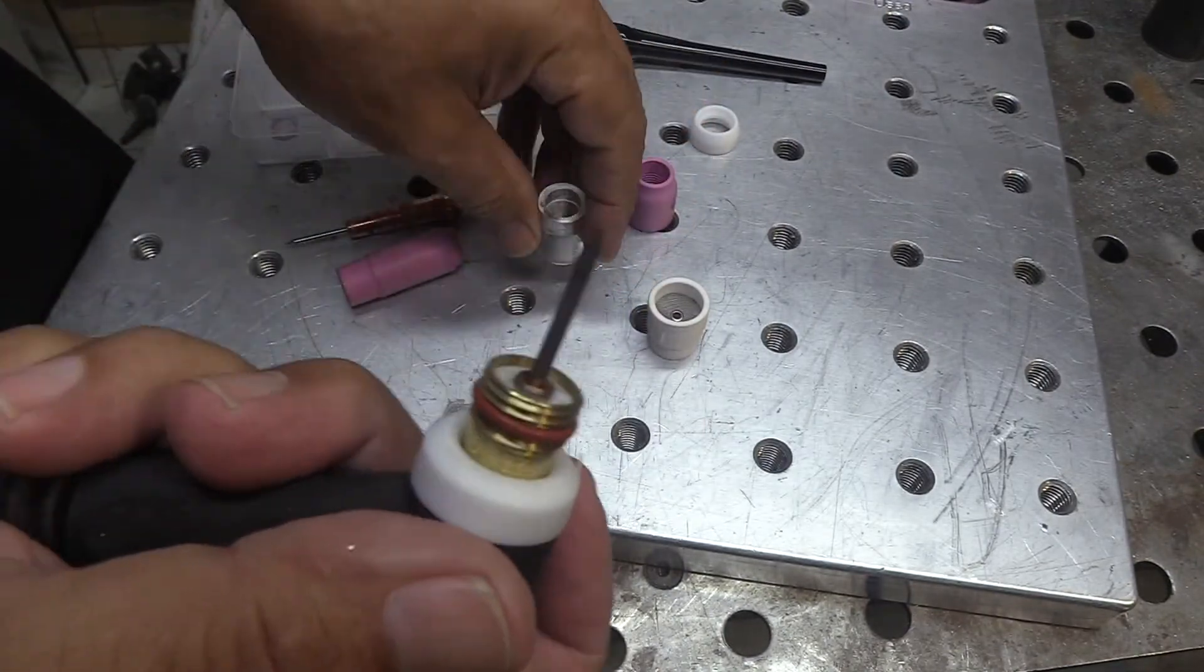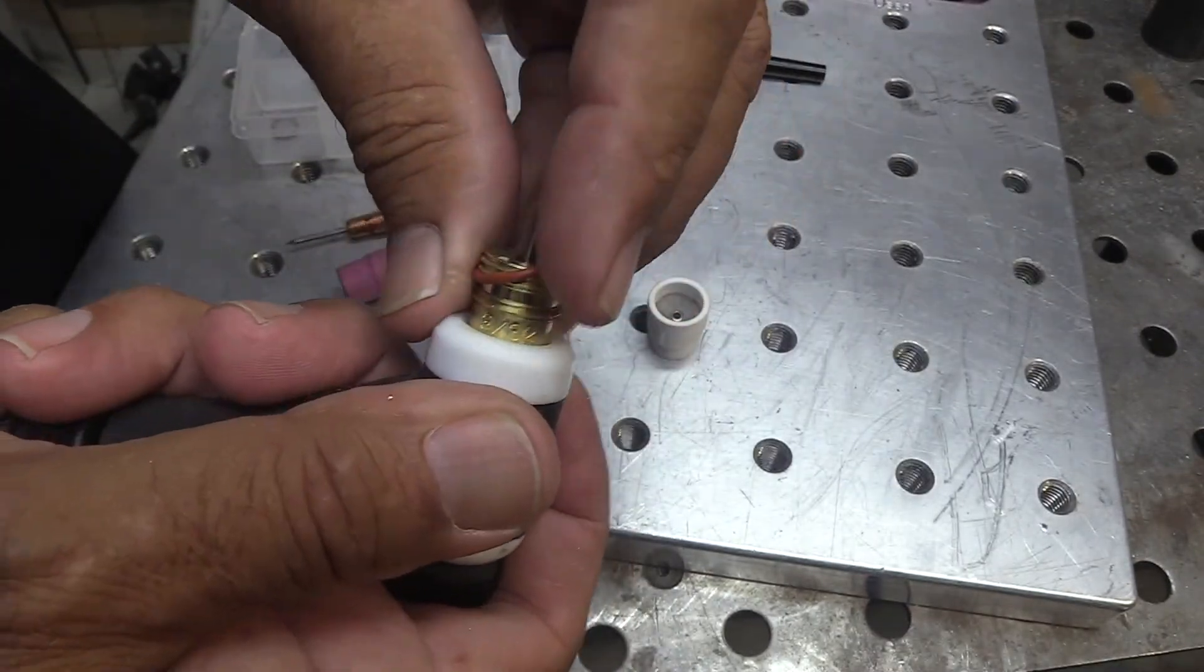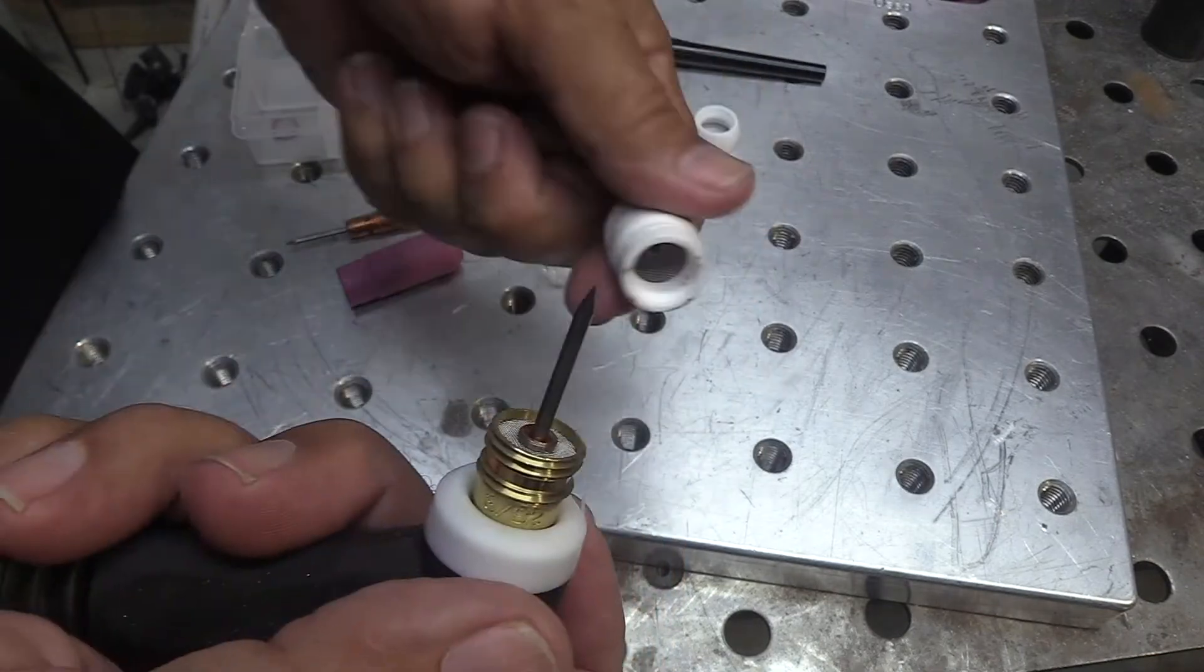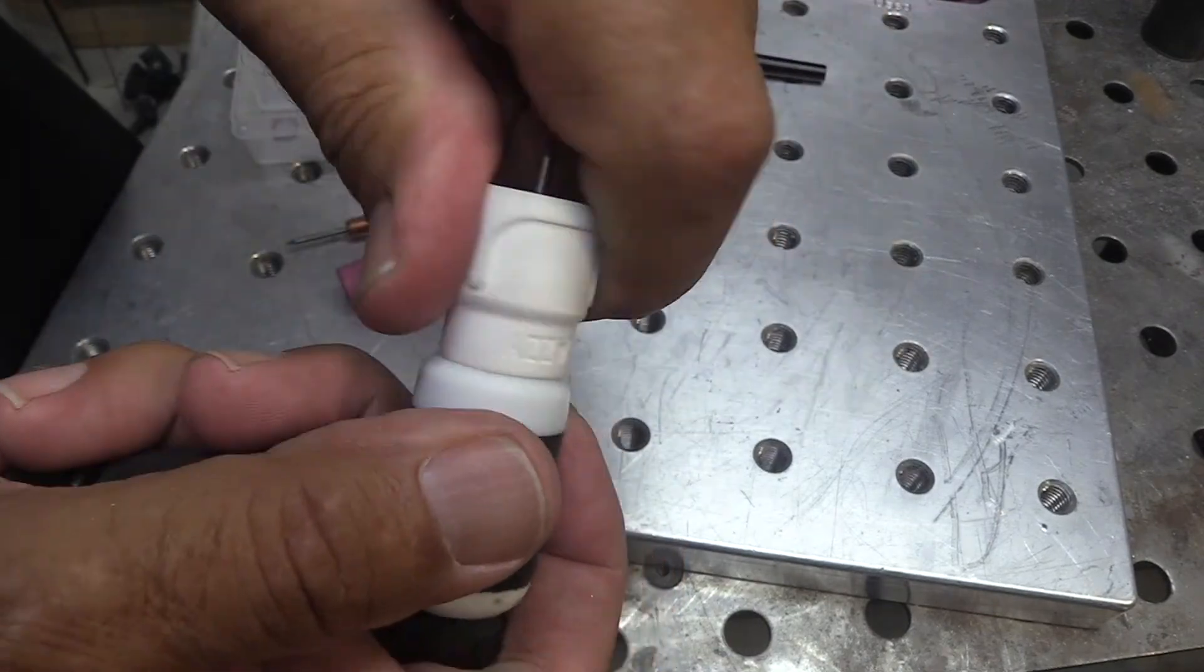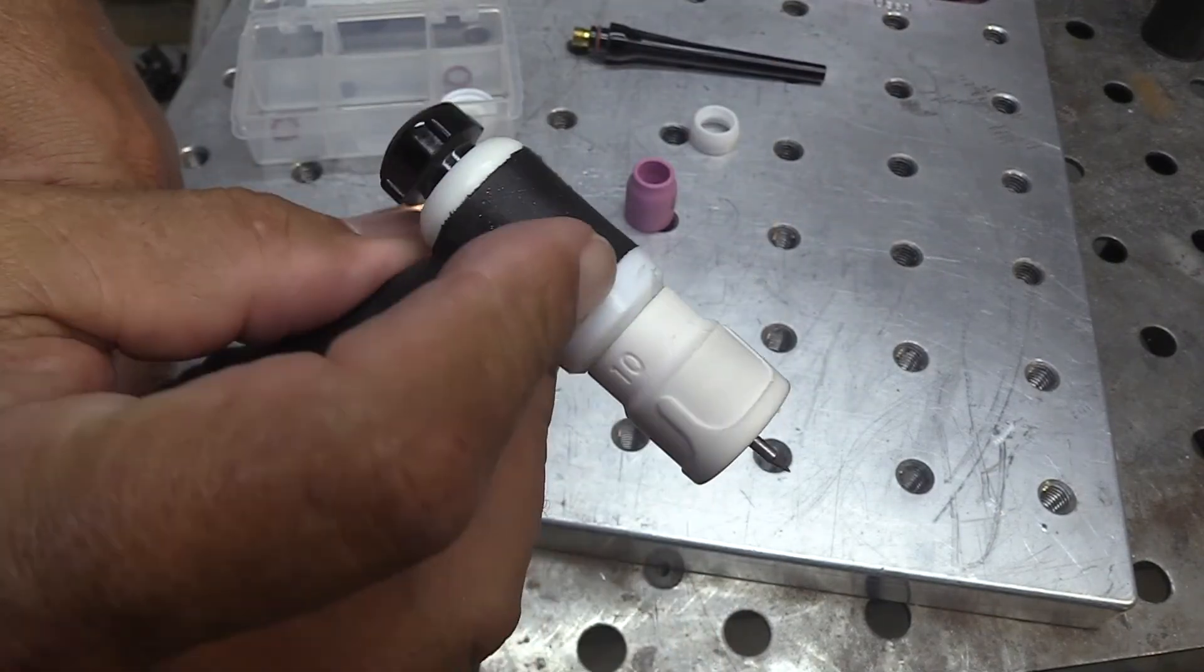The clear cup here also works with the hardware with this 8 combo kit it just comes with a collet body with an o-ring groove on it and you see both both cups work on that particular collet body.